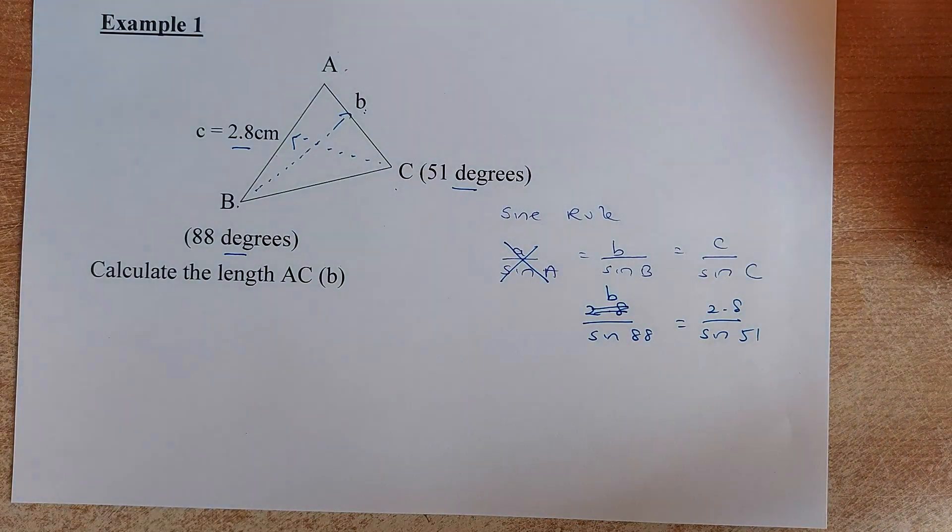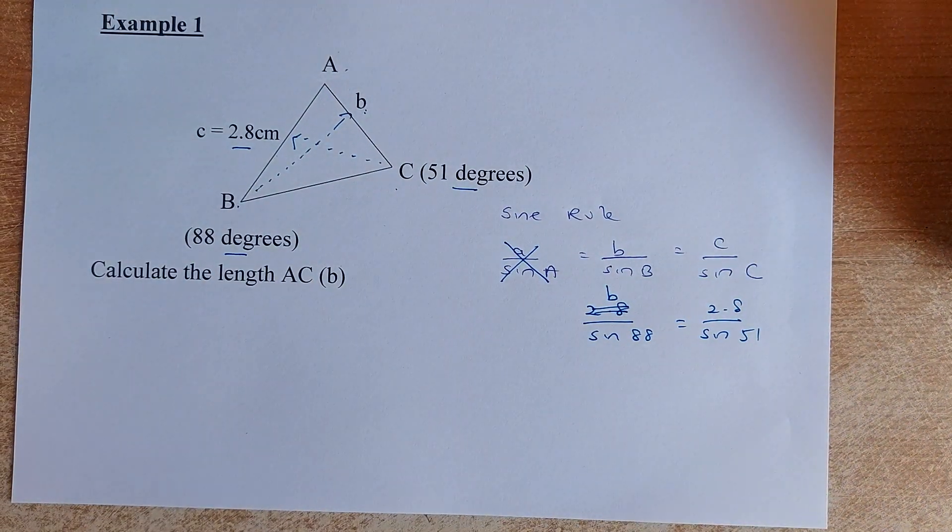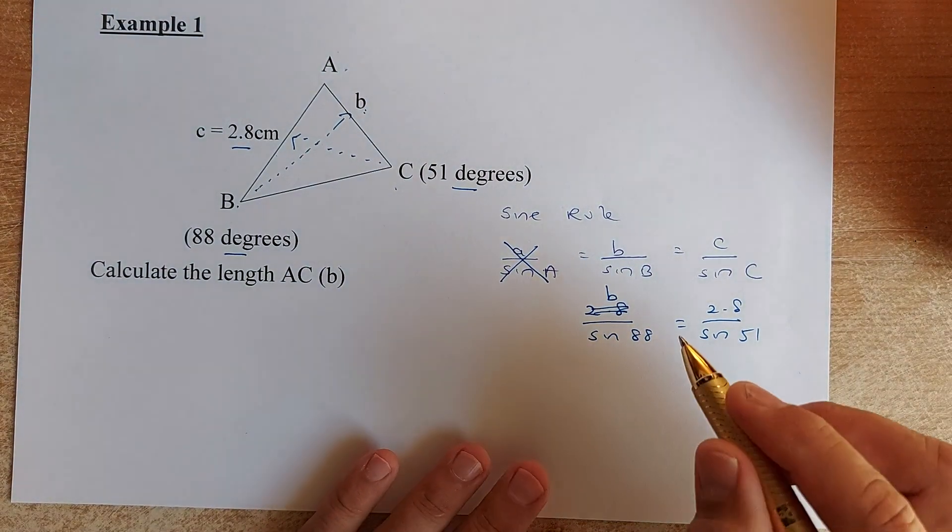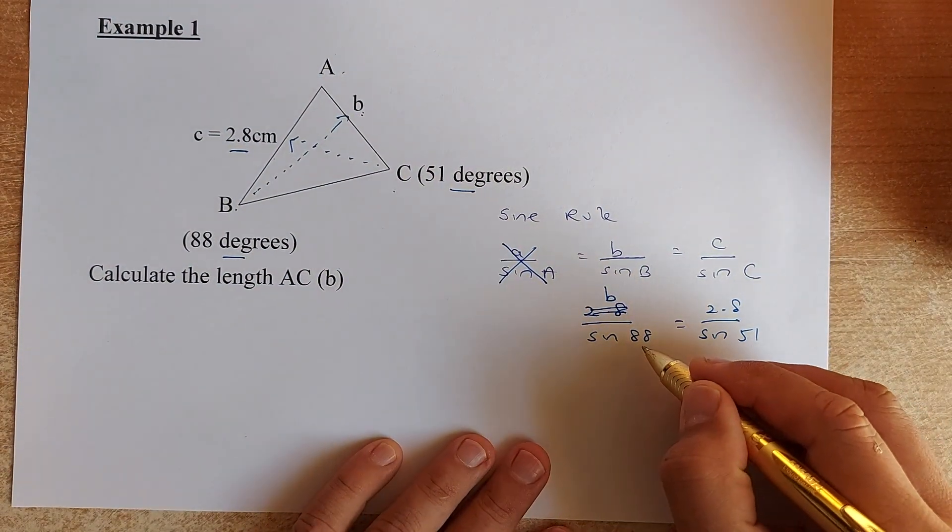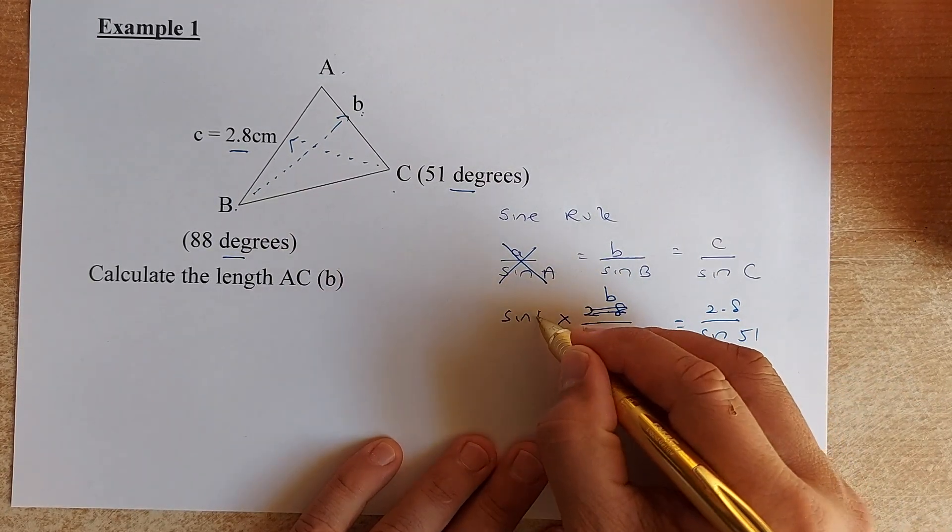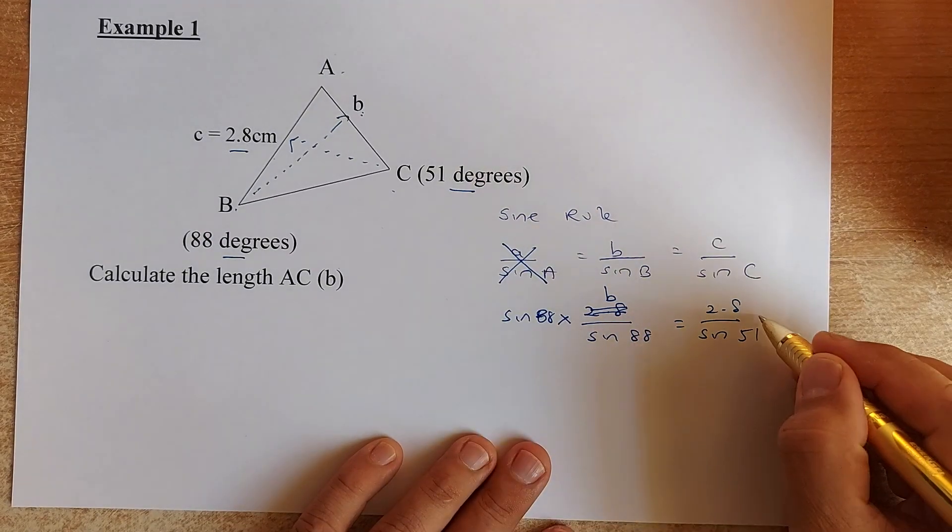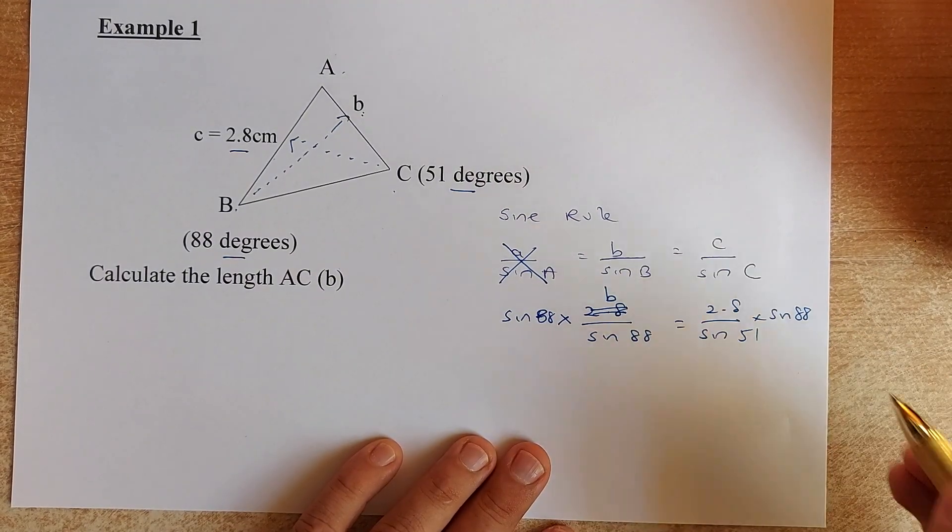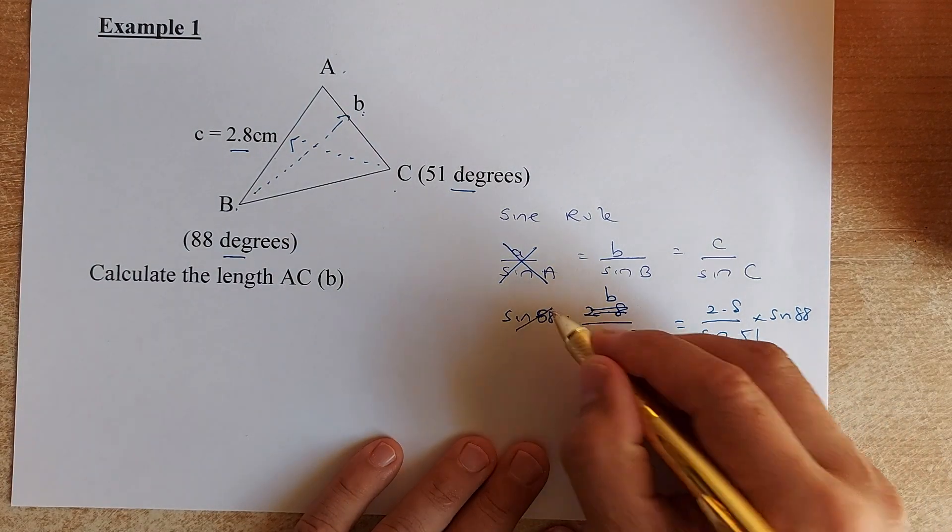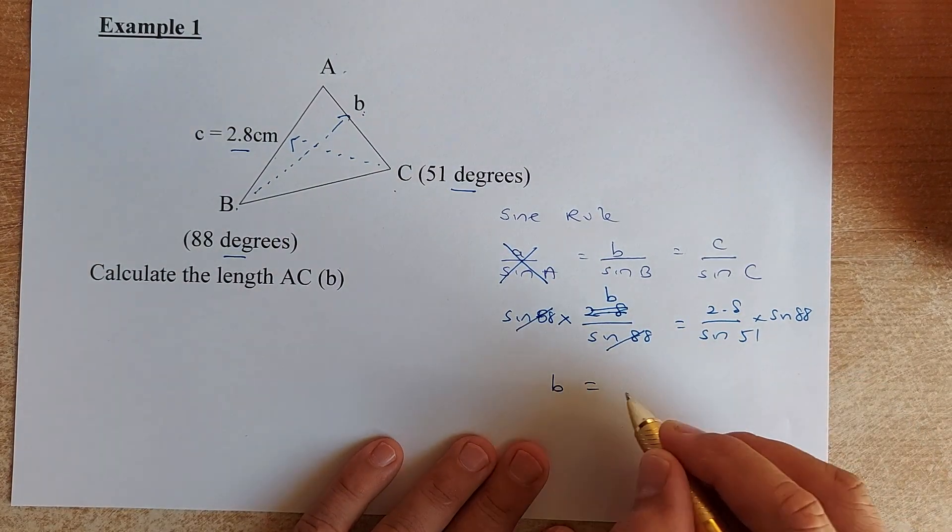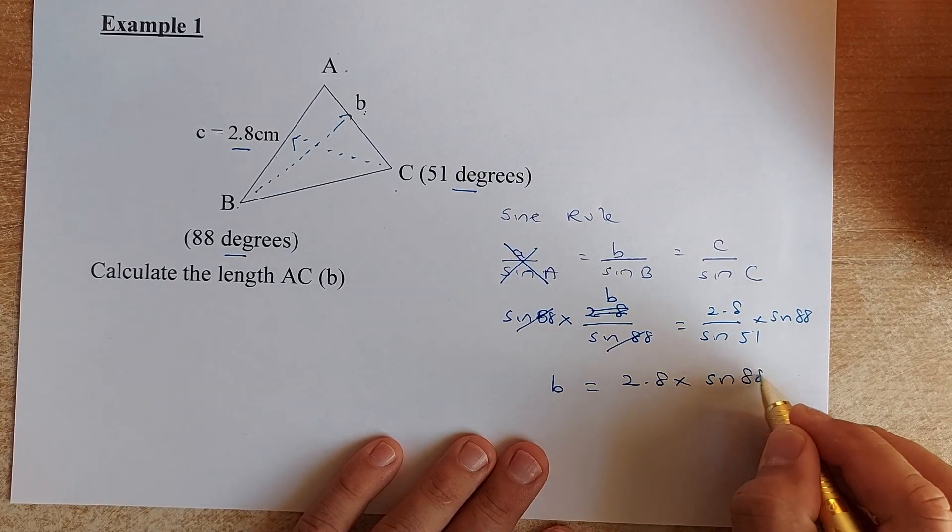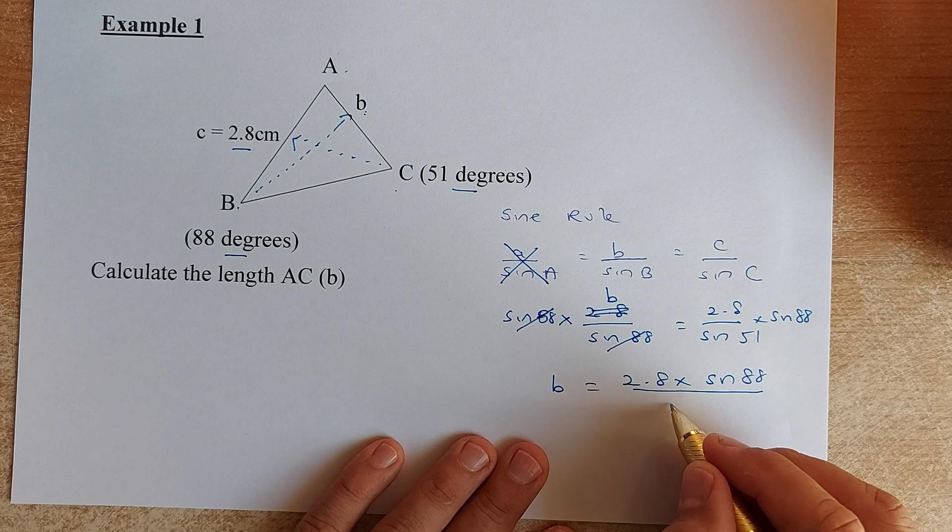Now we are going to do some calculation. Based on algebra, you need to get rid of the sin(88). To do that, you multiply by sin(88) on the left and you multiply sin(88) on the right. So what happens now? This sin(88) and sin(88) will cancel out. Your b is equal to 2.8 multiplied by sin(88) divided by sin(51).